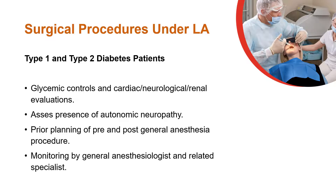The following measures must be taken for surgical procedures under local anesthesia in type 1 and type 2 diabetes patients. Glycemic controls, cardiac, neurological, and renal evaluations must be performed prior to surgery. All diabetic patients must be assessed for the presence of autonomic neuropathy. The pre- and post-general anesthesia procedure must be determined in advance and implemented and monitored along with the general anesthesiologist and the related specialist treating the patient for diabetes.